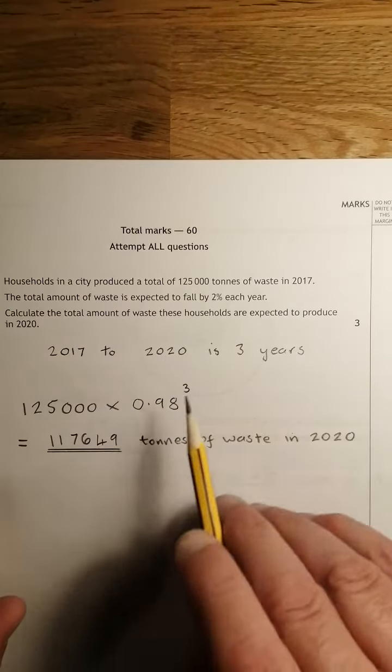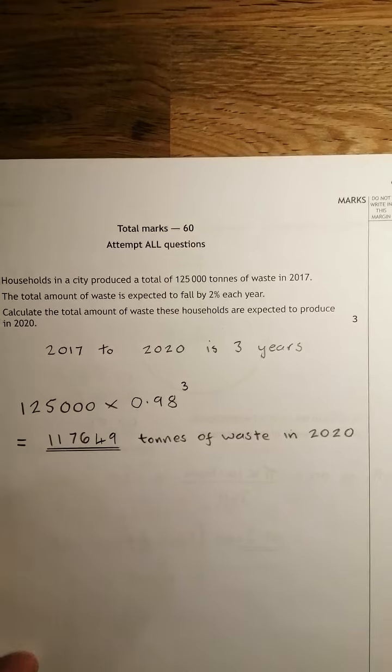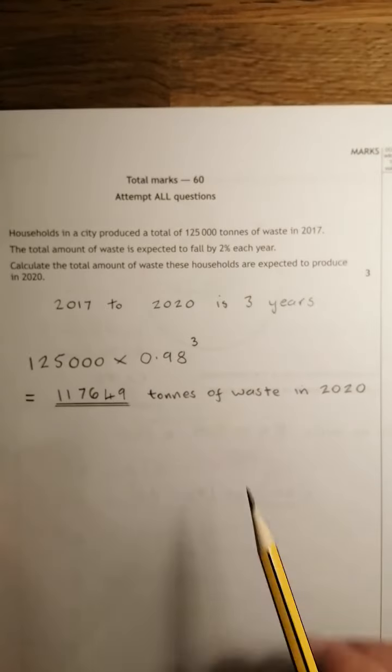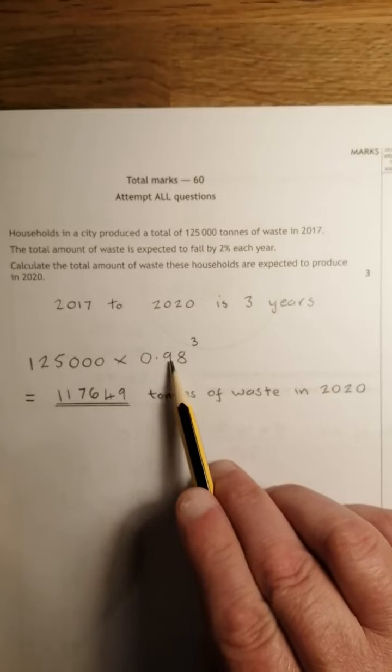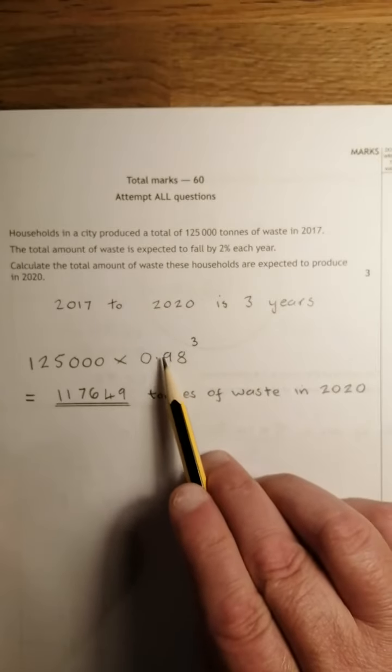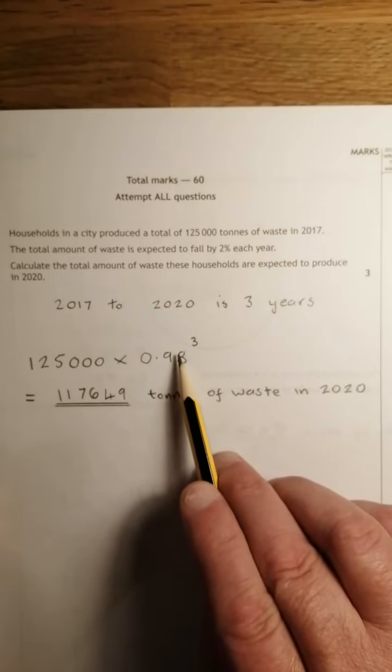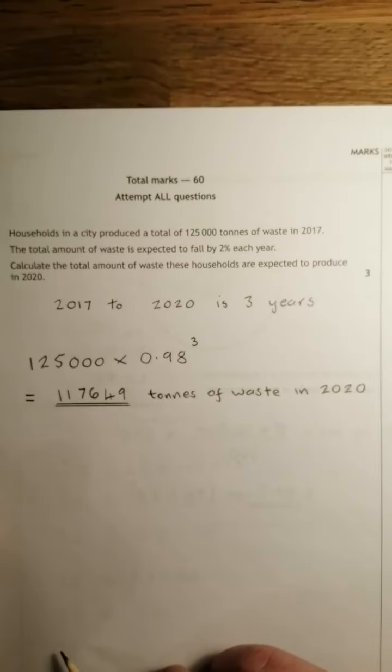So 2017 to 2020 is 3 years. And how do you take away 2% from something? You multiply it by 0.98. That there is 100 take away 2, which is 98, so 0.98. That's how you do that.